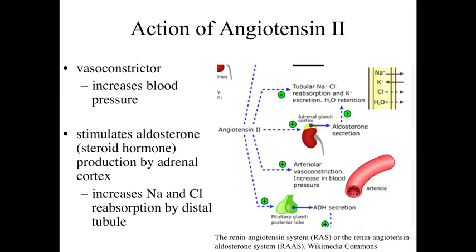Angiotensin II also stimulates aldosterone production in the adrenal cortex — a steroid hormone that increases sodium and chloride reabsorption within the distal tubules. As the filtrate passes through the tubules, we regulate what's reclaimed versus eliminated. More sodium and chloride reabsorption means less lost in urine; that sodium and chloride enters the body's fluids and bloodstream, drawing in more water. Higher salt concentration means higher water volume in the blood, pumping up blood volume and increasing blood pressure.